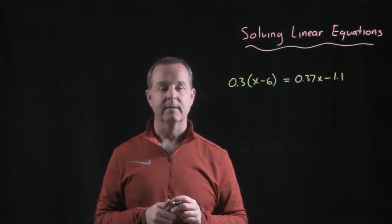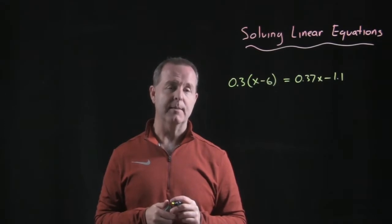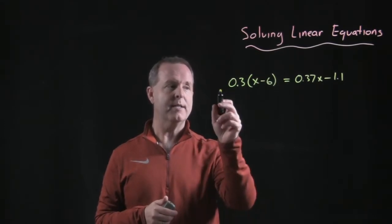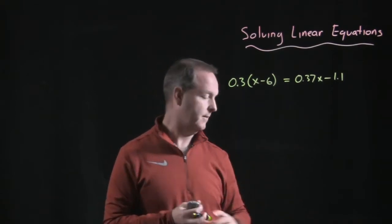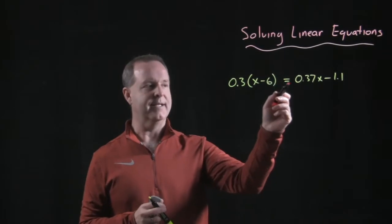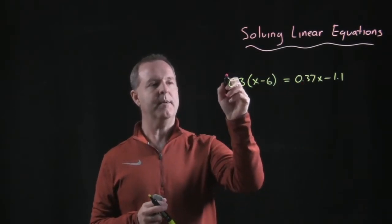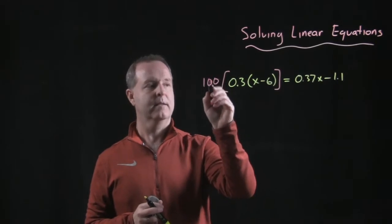What number, is there a number that maybe I can multiply both sides through that will eliminate the decimals? Well, I notice that I have a decimal of 0.3 and 0.37. So to eliminate this decimal that's in the hundredths spot, maybe what I'm going to do is multiply both sides by 100.